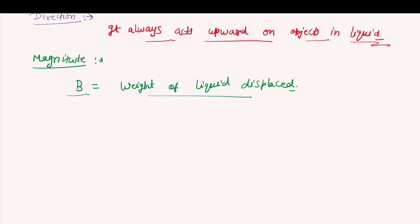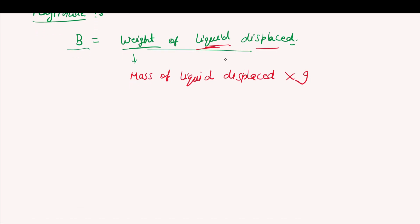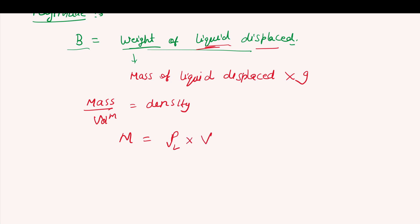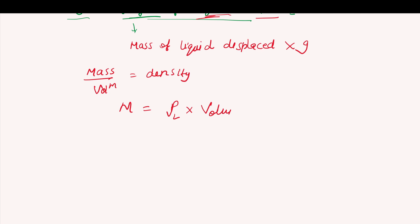Weight, as we know, is given by mass into g, where mass here is the mass of liquid displaced. So: mass of liquid displaced into g. We know that mass divided by volume equals density, so mass m equals density — denoted by rho — of liquid, multiplied by volume of liquid displaced.